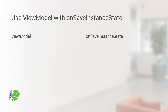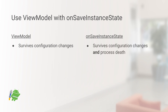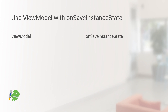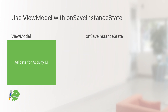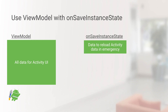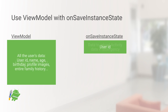Second tip: ViewModels are meant to be used in addition to onSaveInstanceState. ViewModels do not survive process shutdown due to resource restrictions, but onSaveInstanceState bundles do. ViewModels are great for storing huge amounts of data; onSaveInstanceState bundles, not so much. Use ViewModels to store as much UI data as possible so that data doesn't need to be reloaded or regenerated during a configuration change. onSaveInstanceState, on the other hand, should store the smallest amount of data needed to restore the UI state if the process is shut down by the framework — for example, just store the user's database ID in onSaveInstanceState.